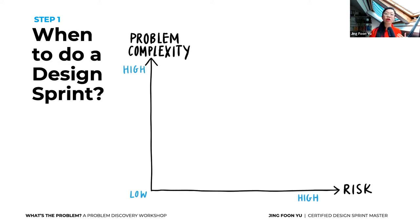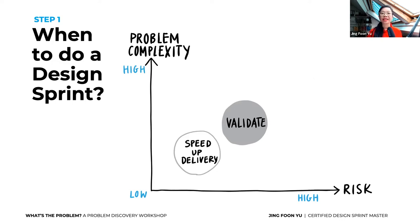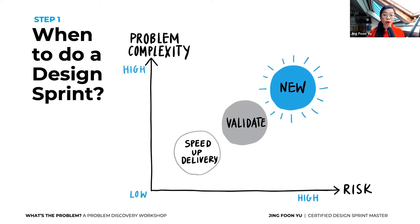If you look at a graph mapping problem complexity against risk: you could use a sprint to speed up delivery — low complexity, low risk. Or to validate something like new features for an existing product, like a new shopping funnel — a bit higher on complexity and risk. Lastly, new business propositions or a new target audience fall in the high problem complexity and high risk quadrant. This last case is when I would run a problem discovery workshop.